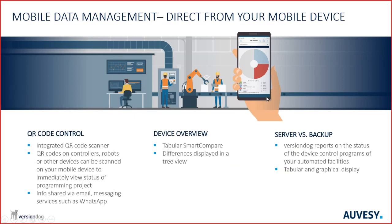We also have mobile apps available for Apple iOS and Android. You can scan a QR code on a machine and immediately get information: how many versions have been done, is the backup current, are there differences, what's the cycle time and memory usage, are there forcing values active — a live overview directly in front of the machine.